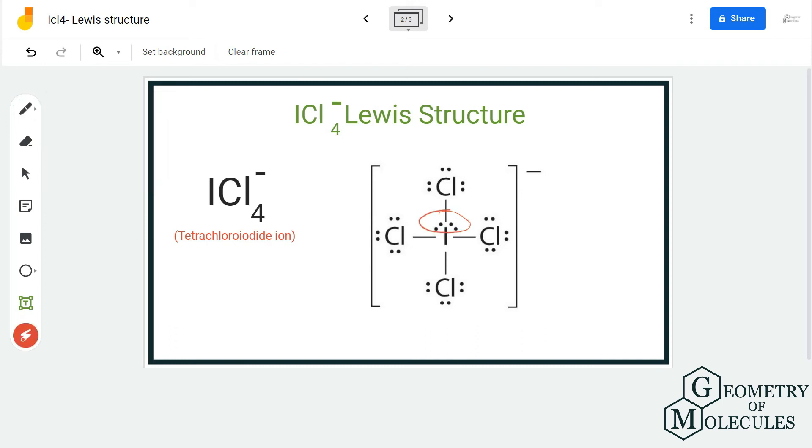You can also check the formal charges of all the atoms in this molecule and you will come to know that iodine has a charge of minus one, which is fine because this ion has a charge of minus one.